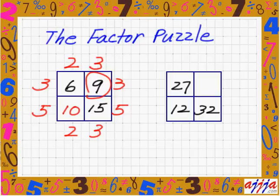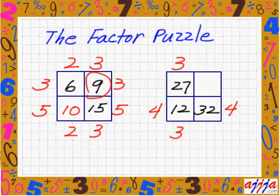So 27 and 12 must be 3 and 3. So now, 3 times what is 12? 4 right there. 4 times what? That means 4 right there must be the same. Now, 4 times what is 32? That's right, 8. That means 8 right there.